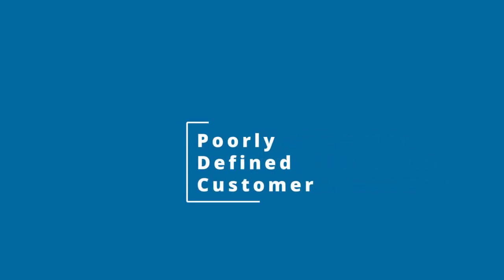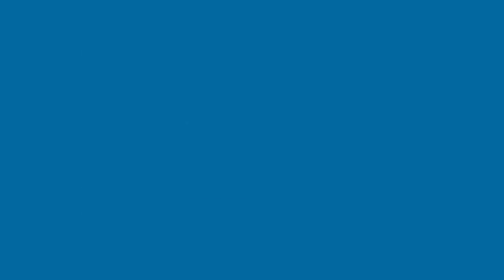Number four: having a poorly defined customer. Forget pitching — not understanding your customer will kill your startup anyway. Founders often confuse having a large market with having a really broad, general customer, and those are not the same thing. We're looking for a tight niche within a large market that we can grow into. If you're anything before series A, get way more specific than you think. Get so specific with your niche that it makes you uncomfortable, like you're leaving too much on the table. Once you're at that level of specific, get one more click more specific.